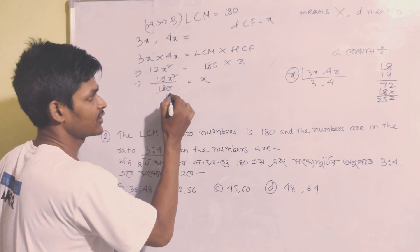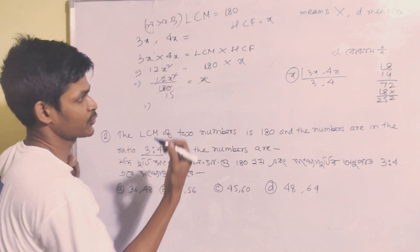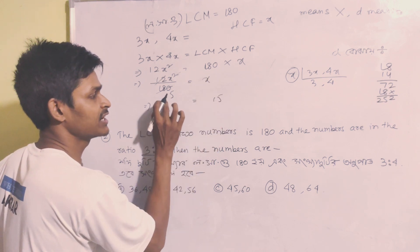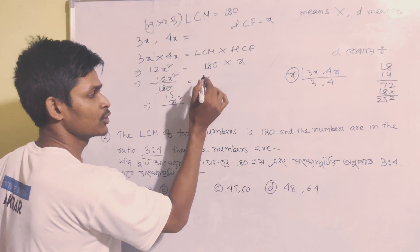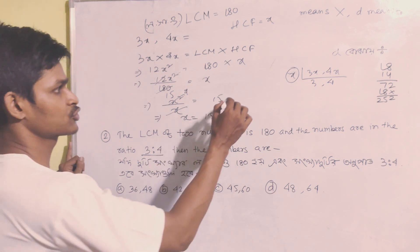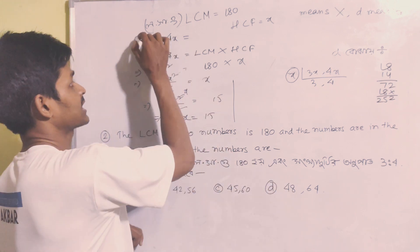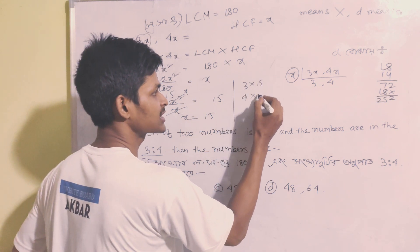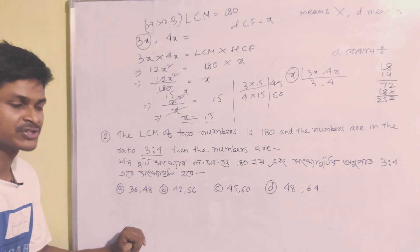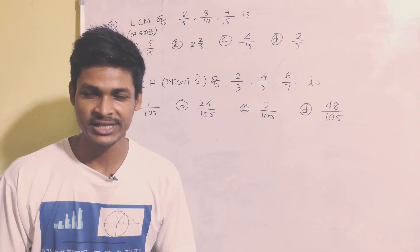Solving: 180 equals 3x times 4x divided by x, giving x equals 15. So 3x equals 45 and 4x equals 60. Our answer is 45 and 60, Option C. This is an important question, which appeared in 2019.